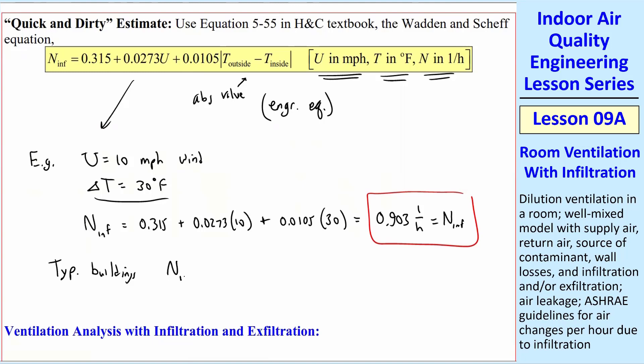Typical buildings, N infiltration varies from around 0.5 to 2 or 3, 1 over hour.